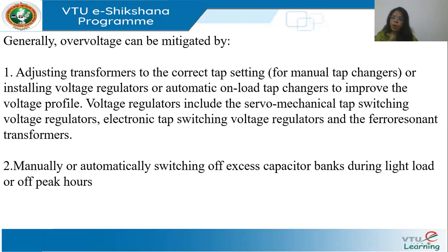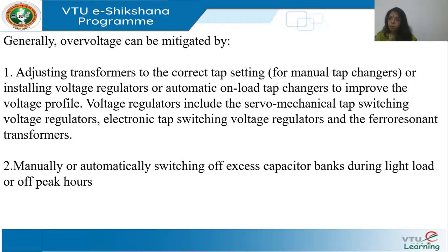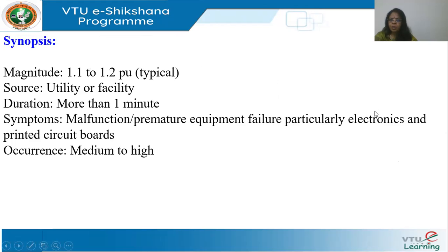The second solution is to switch off capacitor banks, as they are a major cause of over voltage under light load conditions. You may also need to introduce inductors or reactors to bring the voltage down from a high-voltage position. These are the two common mitigation solutions for over voltage.